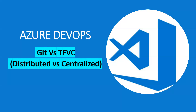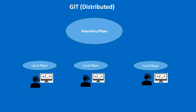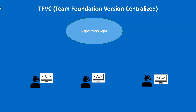TFVC stands for Team Foundation Version Control and it is a centralized version control system. I have a diagram here to explain how it works. Just imagine this is your code repository created in Azure DevOps, where you have all the code of your project. I've shown three developers here, but there could be multiple developers working on the project.